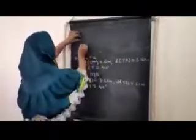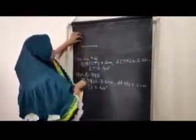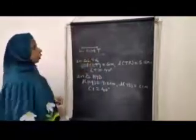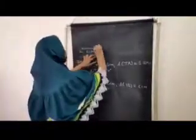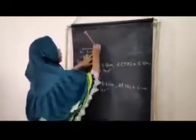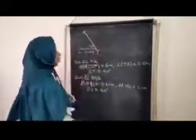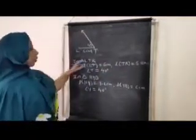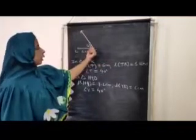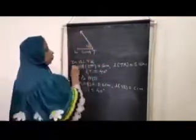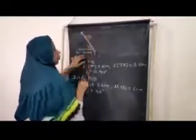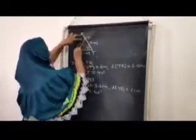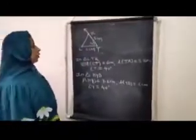Since we have sides LT and TR both sharing vertex T, we can select either as a base. Draw segment LT of 6 cm, then measure angle T as 40 degrees with the help of a protractor. Take a distance of 5 cm in the compass, put the compass pointer on T, and on the ray locate point R at 5 cm distance. Then join LR. This is the required triangle LTR.